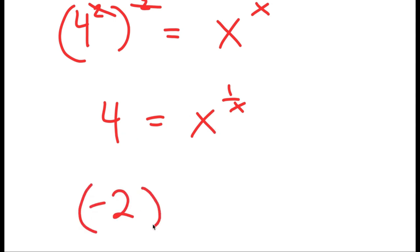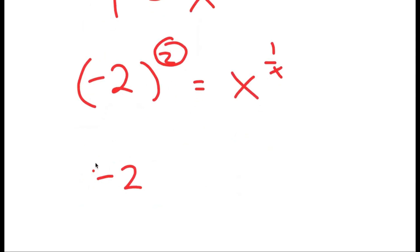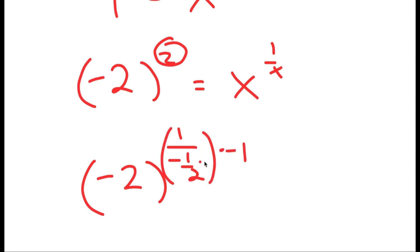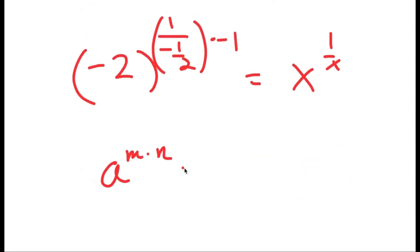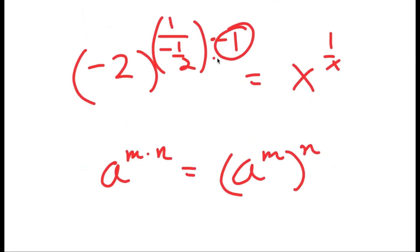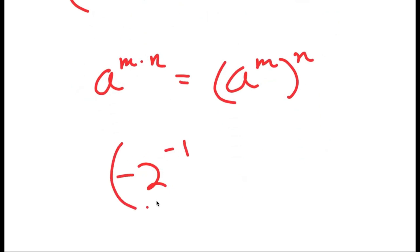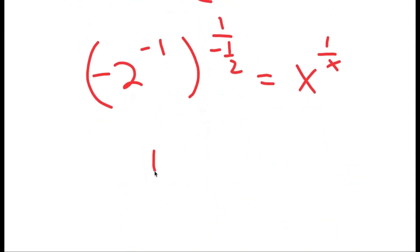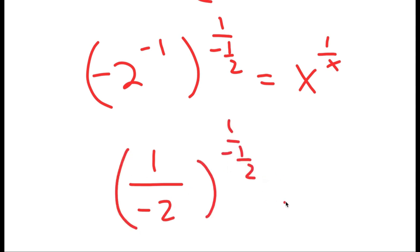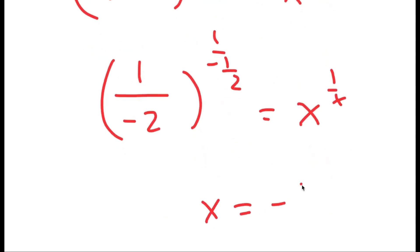Now 4 is the same thing as negative 2 squared, and I can rewrite the exponent 2 as 1 over negative 1 half, times negative 1. Using the property a to the power of m times n equals a to the power of m to the power of n, I move the negative 1 to be an exponent of negative 2. So I get negative 2 to the power of negative 1 to the power of 1 over negative 1 half, is equal to x to the power of 1 over x. And negative 2 to the power of negative 1 is 1 over negative 2, so my solution is x equals negative 1 half.